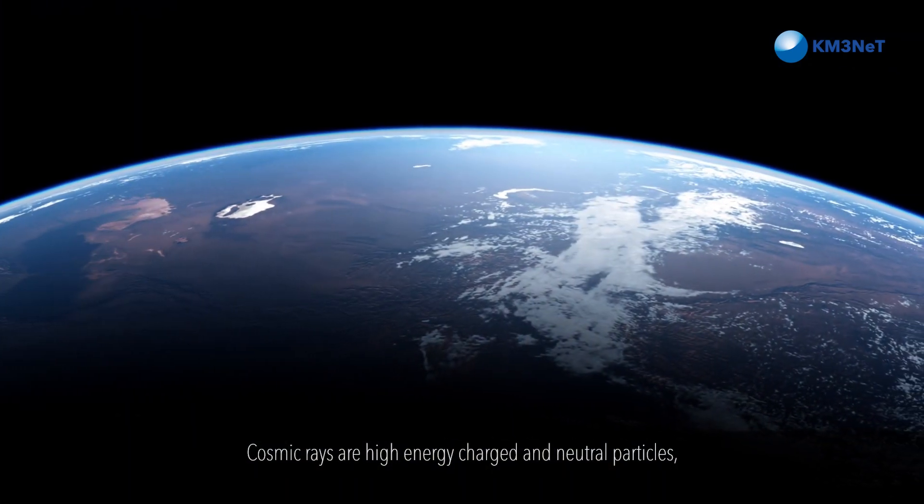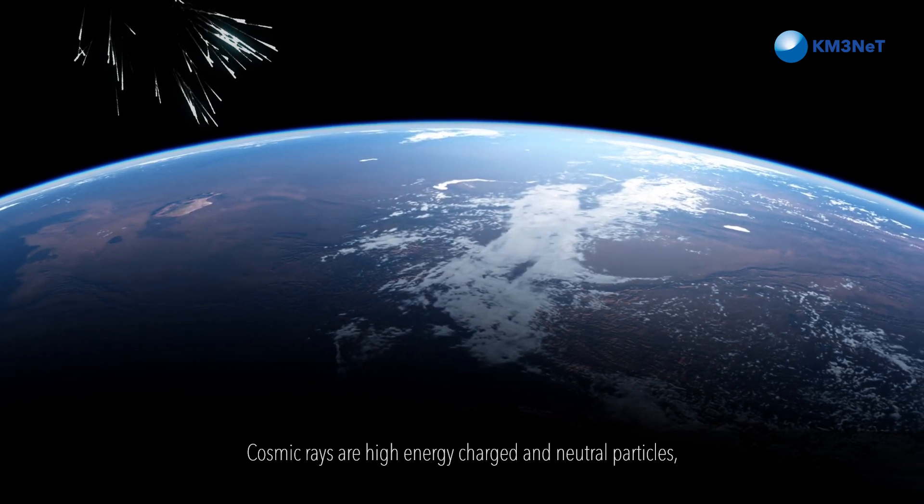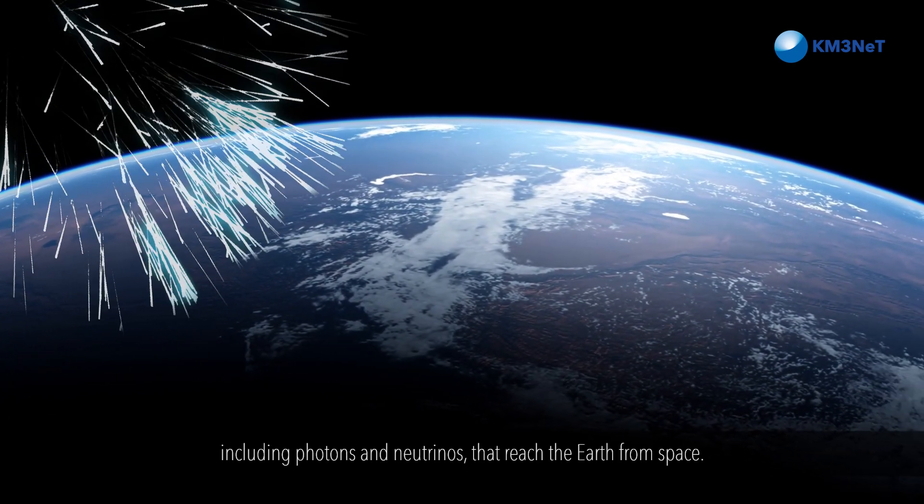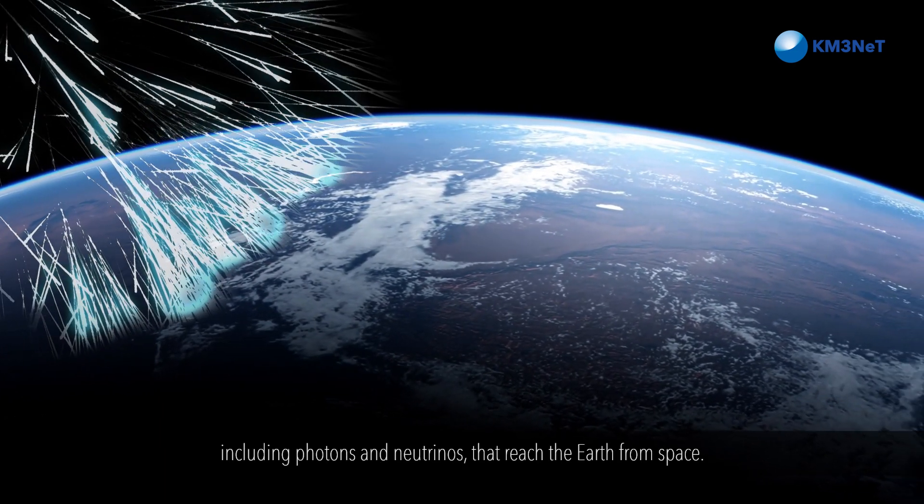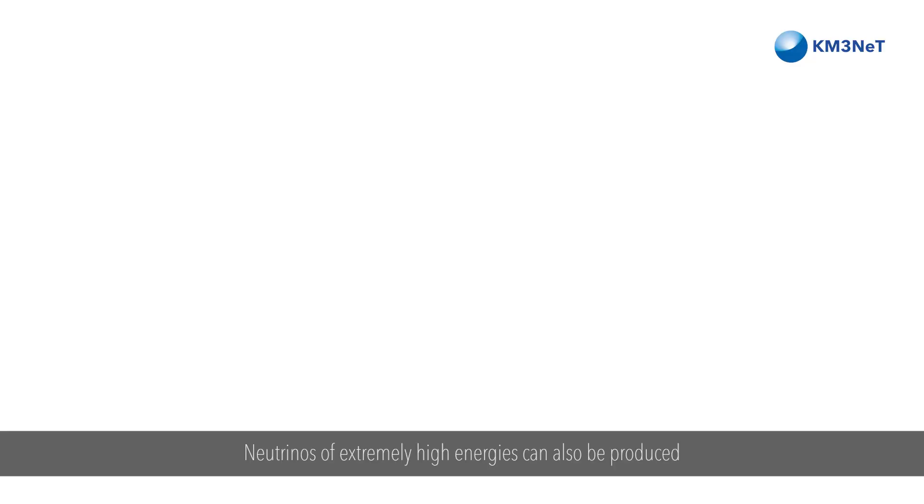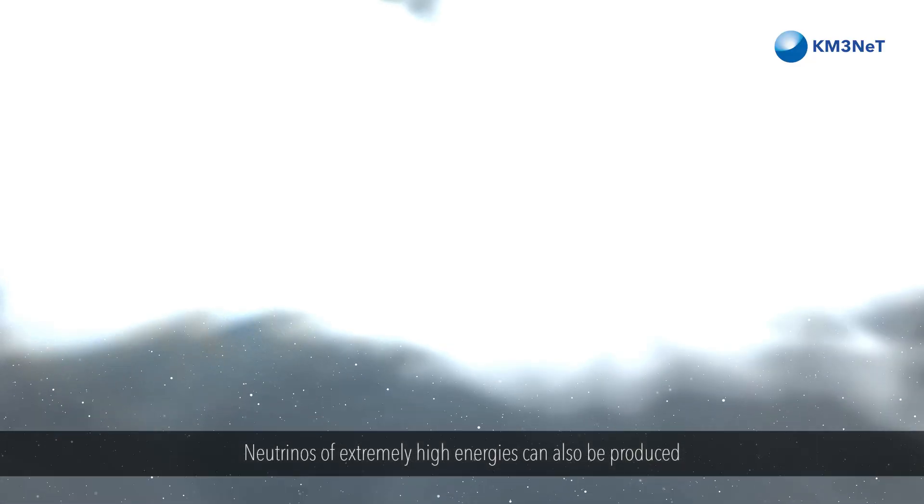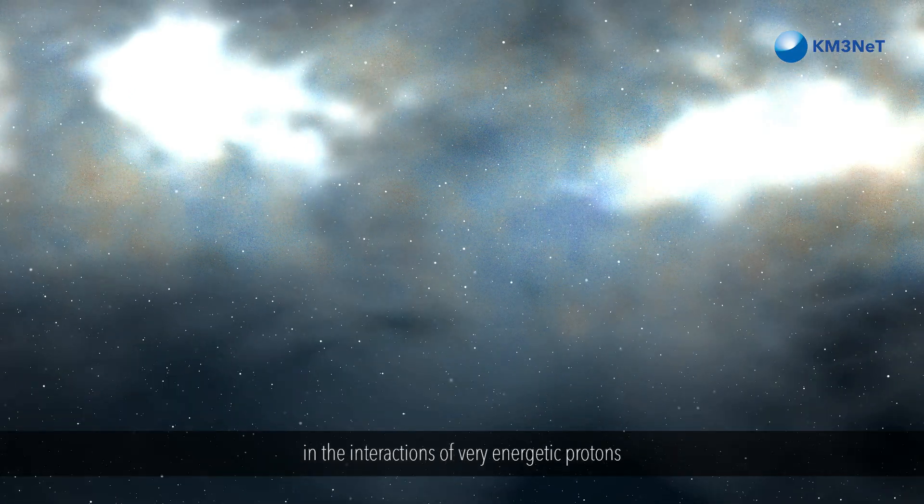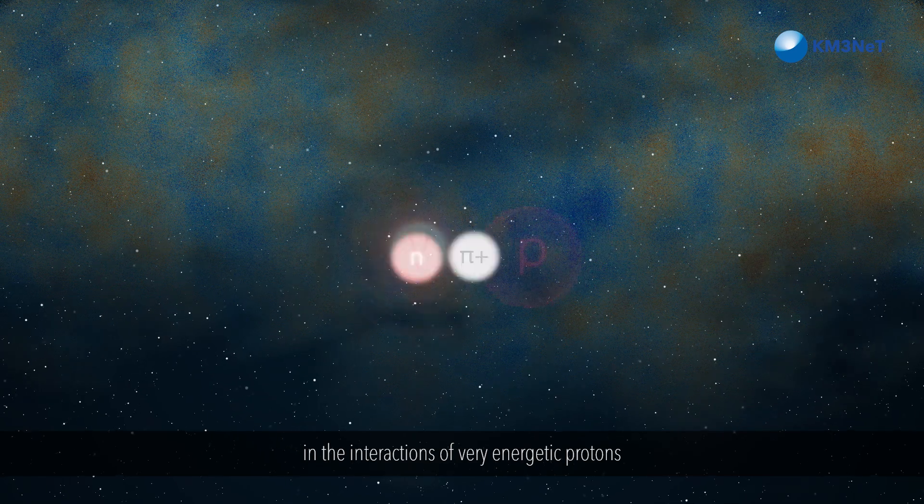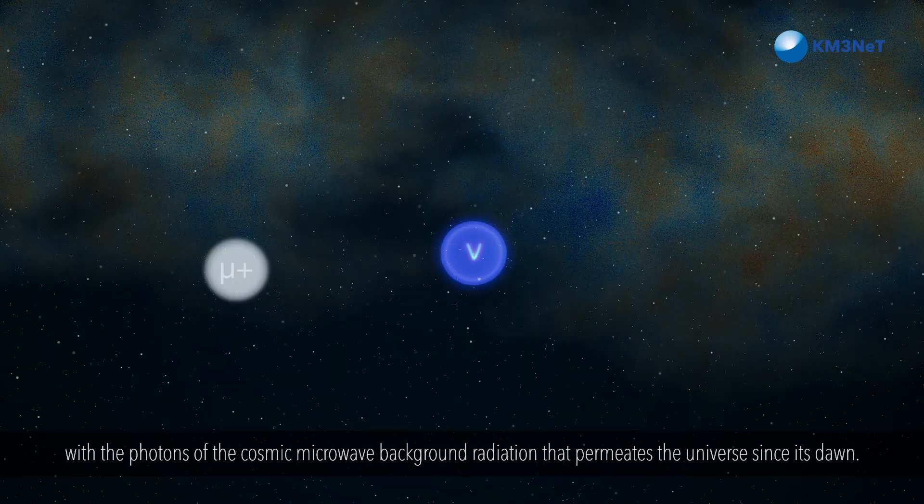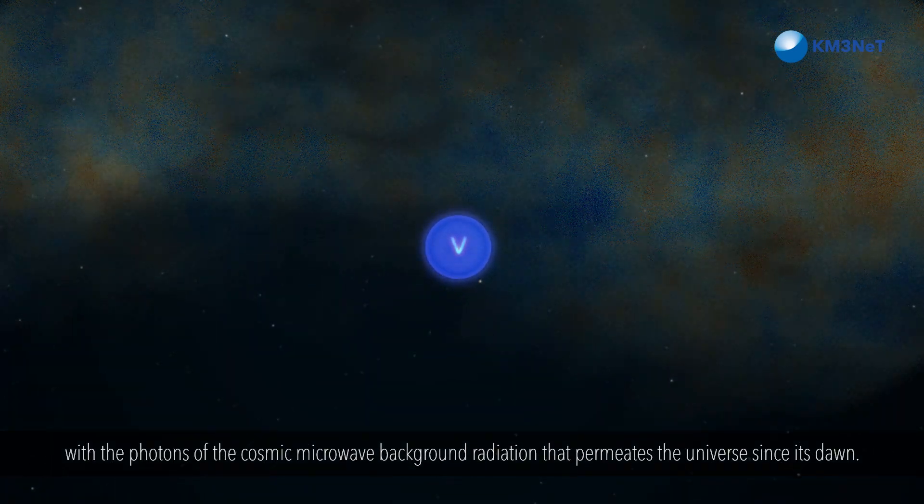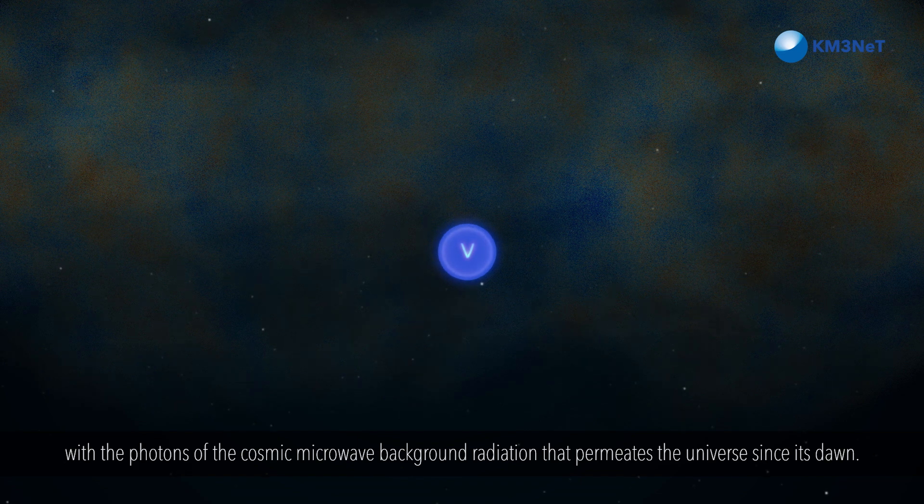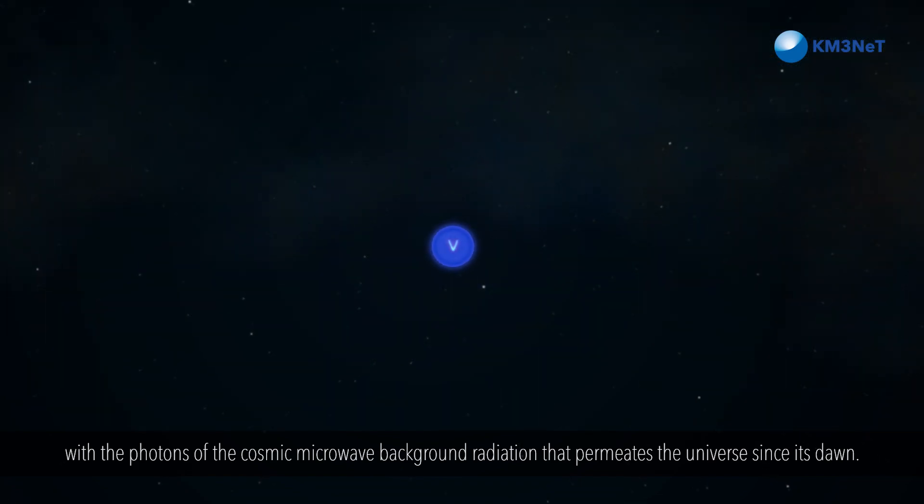Cosmic rays are high-energy charged and neutral particles, including photons and neutrinos, that reach the Earth from space. Neutrinos of extremely high energies can also be produced in the interactions of very energetic protons with the photons of the cosmic microwave background radiation that permeates the Universe since its dawn.